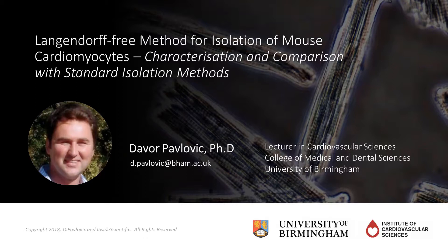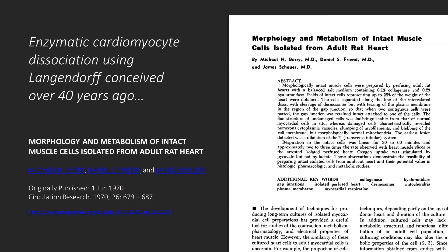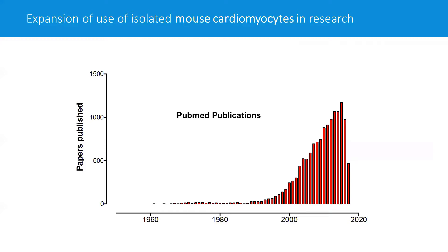In 2016, we presented a new cell isolation technique for isolation of viable mouse cardiomyocytes, but also non-cardiomyocyte cells. This was a collaborative effort between the University of Birmingham and the University of Singapore, particularly Matt Ackers-Johnson. The enzymatic cardiomyocyte dissociation using Langendorff was conceived over 40 years ago. The first report of Langendorff-based isolation was by Michael Berry in Circulation Research in 1970, and since then there has been a tremendous expansion of the use of isolated mouse cardiomyocytes, as shown by exponential growth in PubMed publications from the 1960s to 2018.